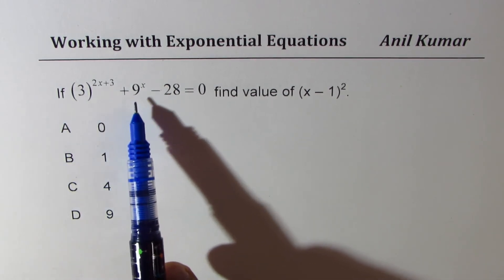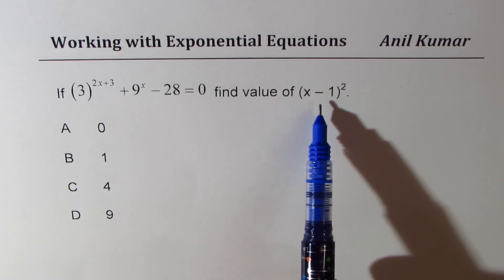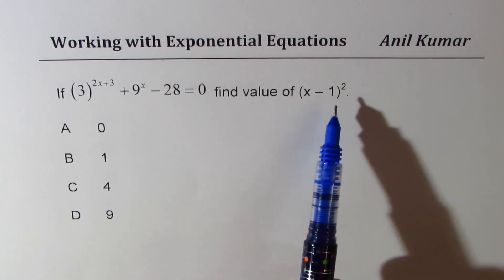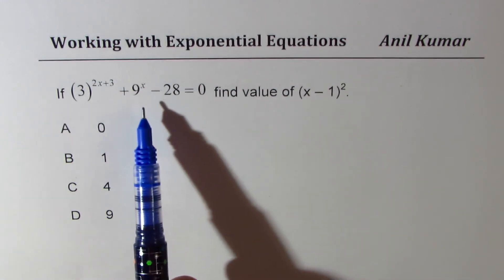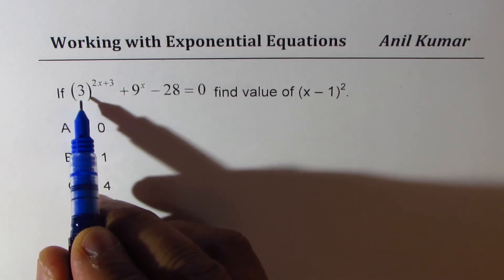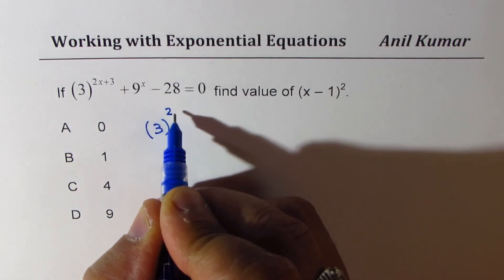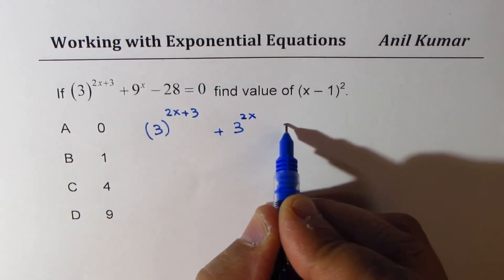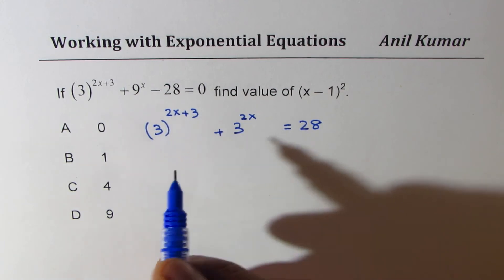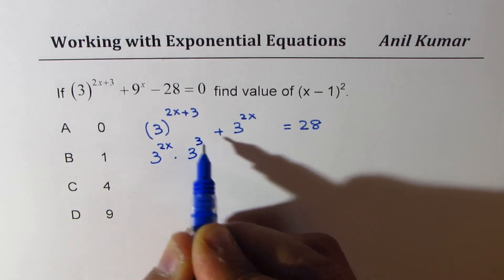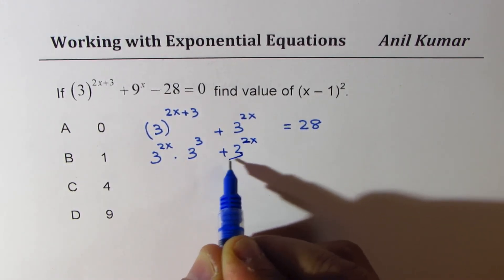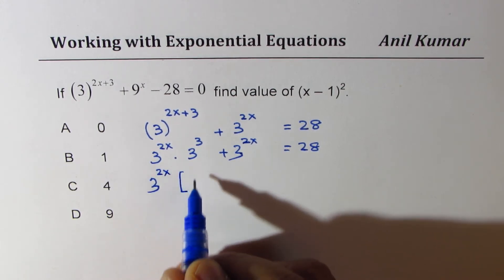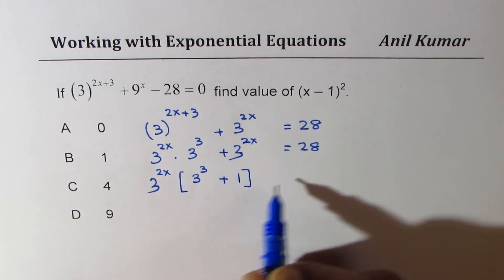Now here is second practice example on exponential equations. If 3 to the power of 2x plus 3 plus 9 to the power of x minus 28 equals to 0, find the value of x minus 1 whole square. So increasingly we notice that they are not saying find the value of x, they want to know something else. So therefore, you should simplify the equations and find the solution. So we have 3 to the power of 2x plus 3. 9 could be written as 3 squared. We get 3 to the power of 2x and we'll take 28 to the other side. Now this really means that it's 3 to the power of 2x times 3 cubed. So 3 to the power of 2x is common factor. So I'm writing 3 to the power of 2x as a common factor. So we get 3 cubed plus 1 equals to 28.